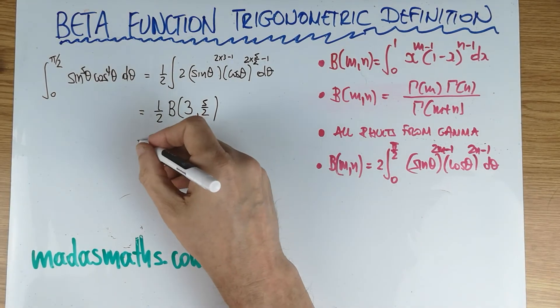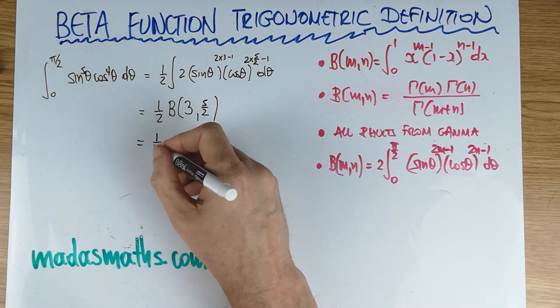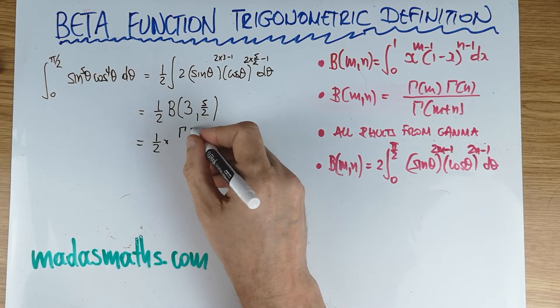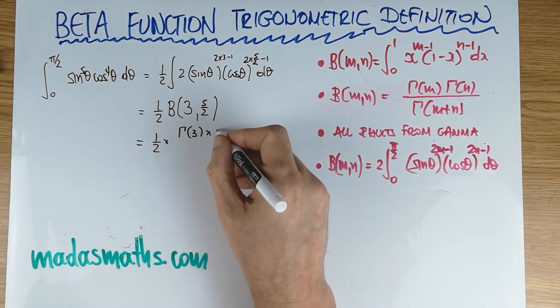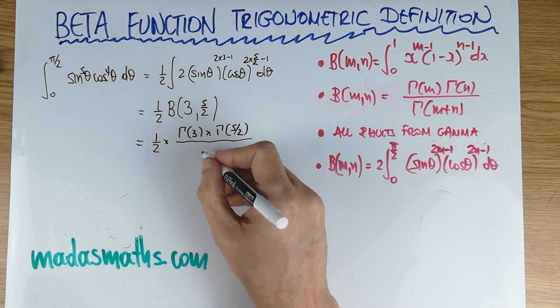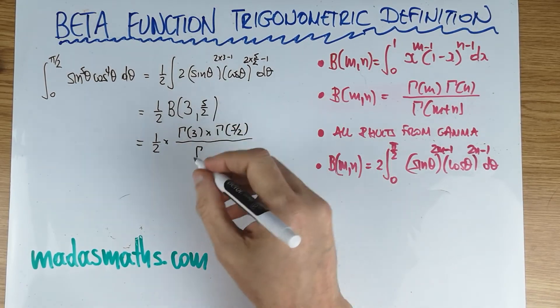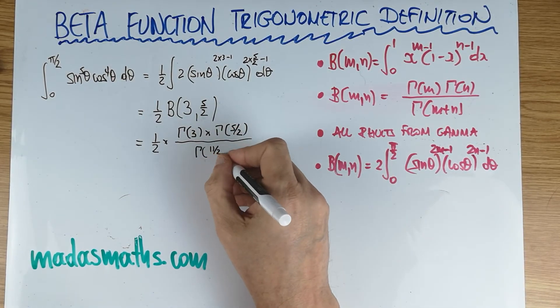And now this is the beta of which two quantities. 2m minus 1, so that's 3. That's your m, 2m minus 1. 2n minus 1 is 5 over 2.